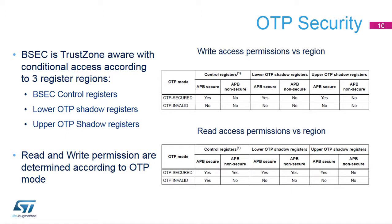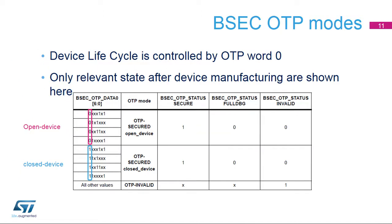BSEC is TrustZone aware with conditional access according to three regions: BSEC control registers, lower OTP shadow registers, and upper OTP shadow registers. For each region, read and write permissions are determined according to the OTP mode. The table shows a simplified view of the device lifecycle.